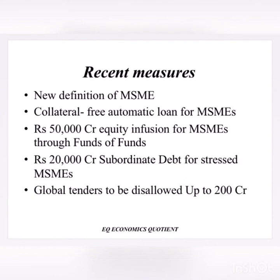What are those measures? First: new definitions of MSME. Second: collateral-free automatic loans for MSMEs. Third: rupees 50,000 crore equity infusion for MSMEs through Funds of Fund. Fourth: rupees 20,000 crore subordinate debt for stressed MSMEs. Fifth: global tenders to be disallowed up to 200 crores. Now we will see in detail about each initiative.